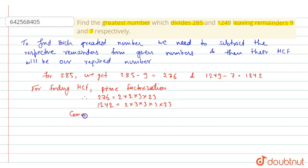So, common factors are 2, 3, 23. So it will be 138.